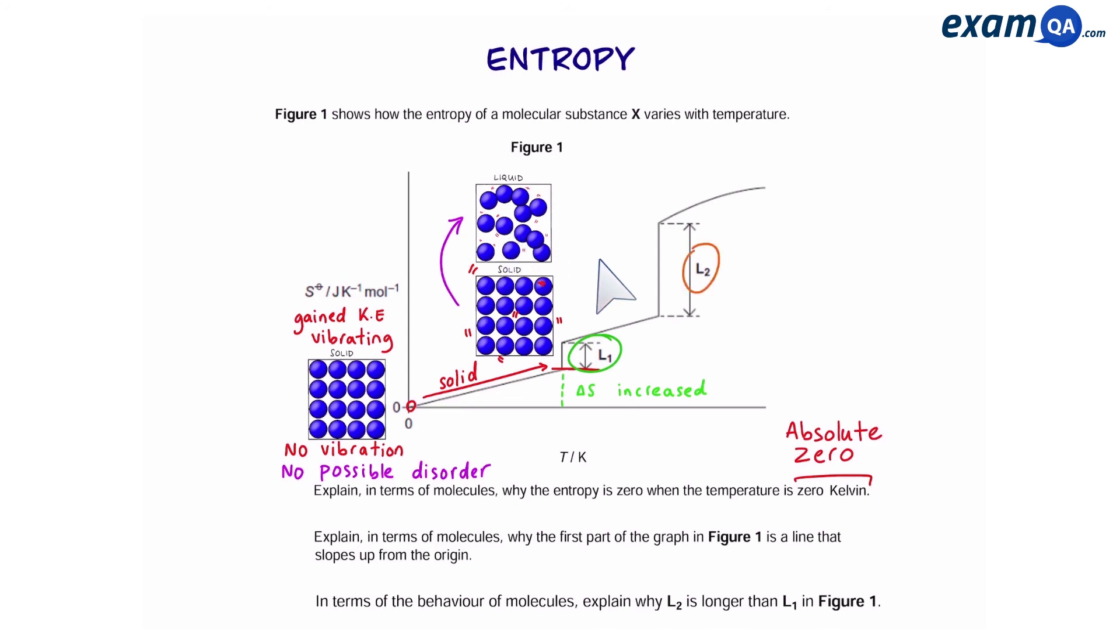L2 is this line and this represents a liquid evaporating into a gas. And again that also causes entropy to increase. However, we can see that the L2 jump is much greater than the L1 jump. So this means there's going to be a greater entropy change, and that's because there's a bigger change in disorder. So going from a liquid to a gas has a bigger change in disorder compared to going from a solid to a liquid.